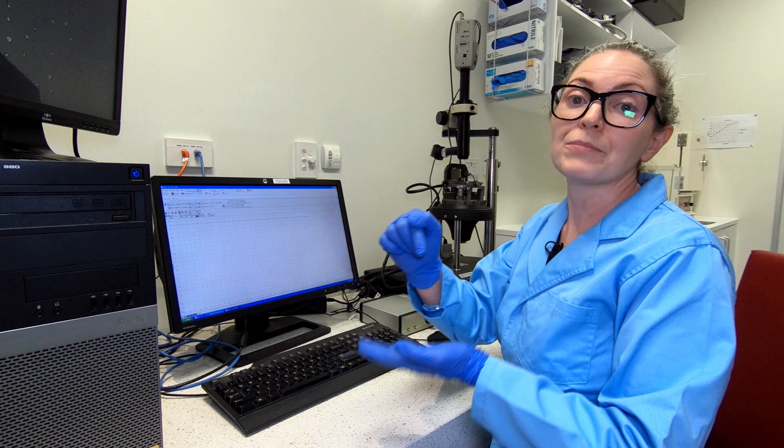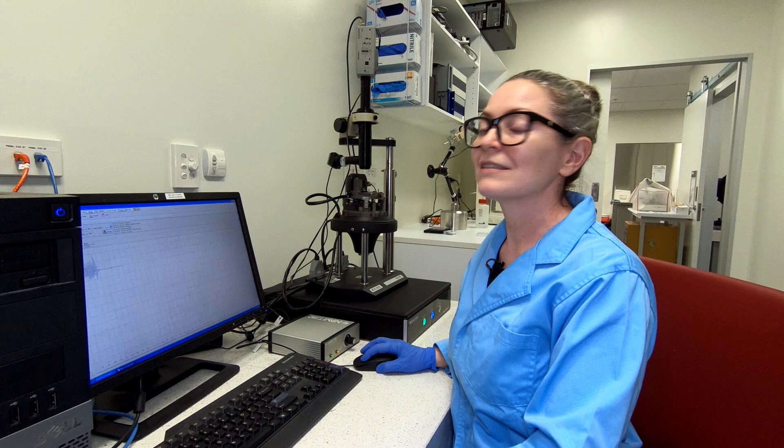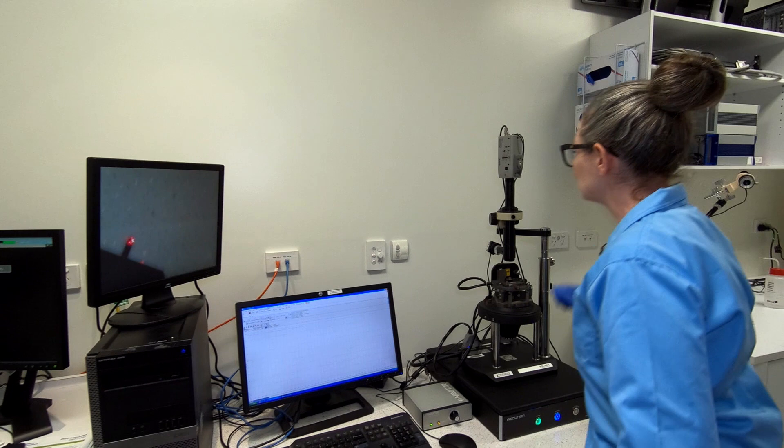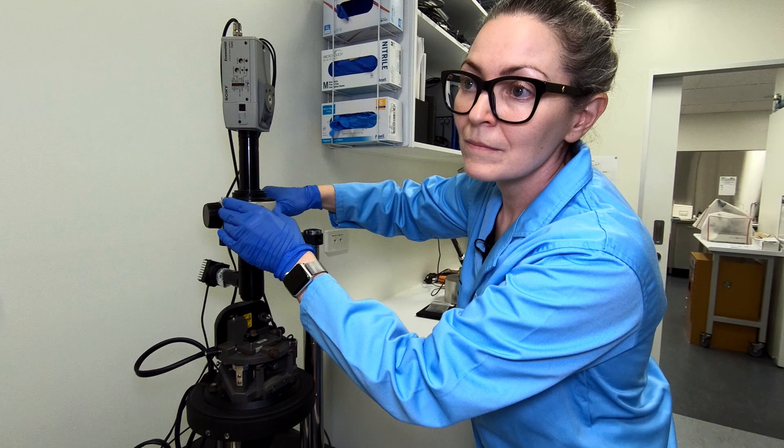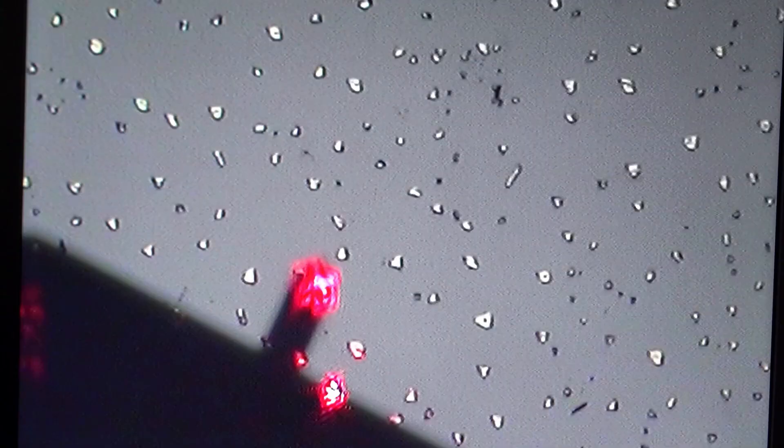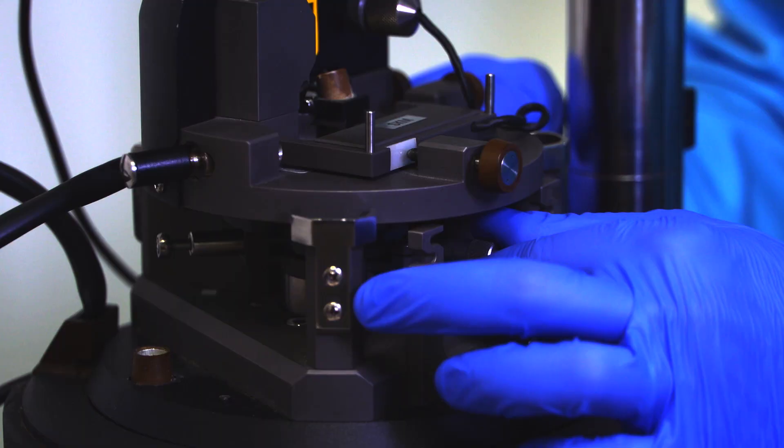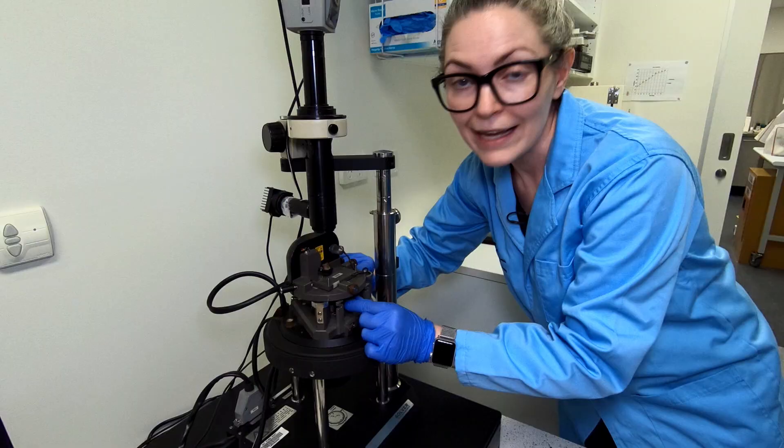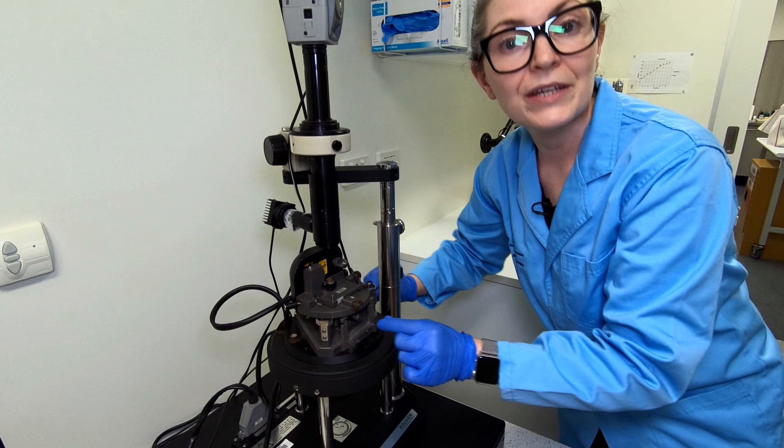We can click the fast move out button in the software to move our sample away from the tip. When we do that, it defocuses in our optical image. So the best thing to do is to refocus our optical image so that we can see the islands a bit better. Now that we can see them, we can use these micrometers to move the sample under the probe tip. The probe tip is probably a few hundred microns from the sample now, so it's fairly safe to do this. Once we've found an island we like, we can re-approach the surface and acquire an image of that specific island. That's what I'm going to do now.